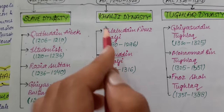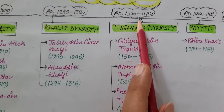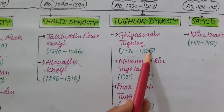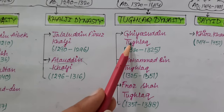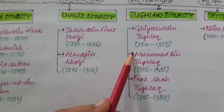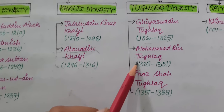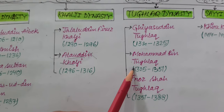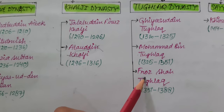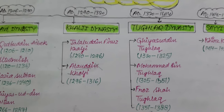Alauddin Khalji ruled from 1296 AD to 1316 AD, after which the Khalji Dynasty came to an end. The next was the Tughlaq Dynasty, which ruled from 1320 AD to 1414 AD. Ghiyasuddin Tughlaq founded this dynasty and ruled from 1320 to 1325 AD. Next was Muhammad bin Tughlaq, who ruled from 1325 to 1351 AD, followed by Firoz Shah Tughlaq, who ruled from 1351 to 1388 AD.